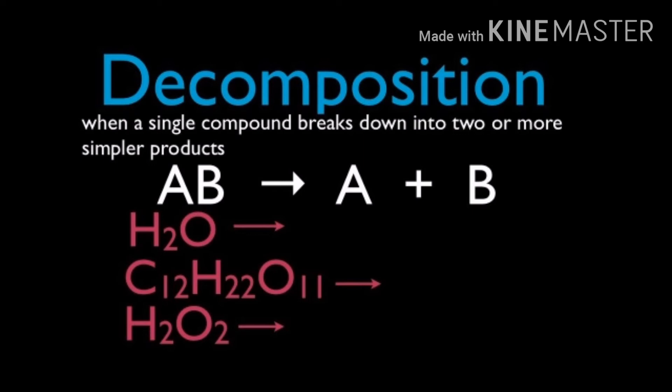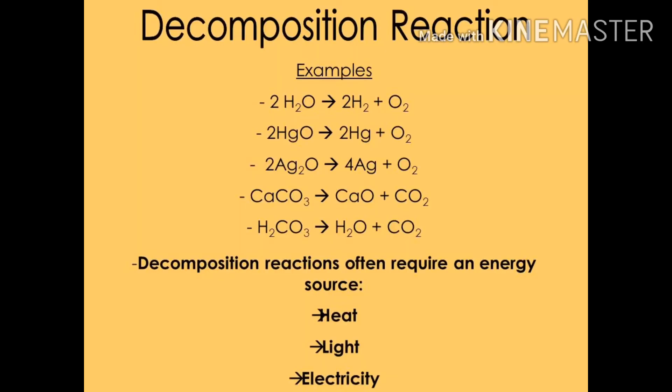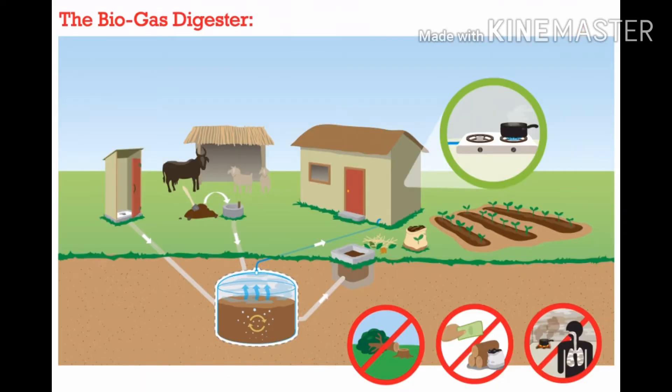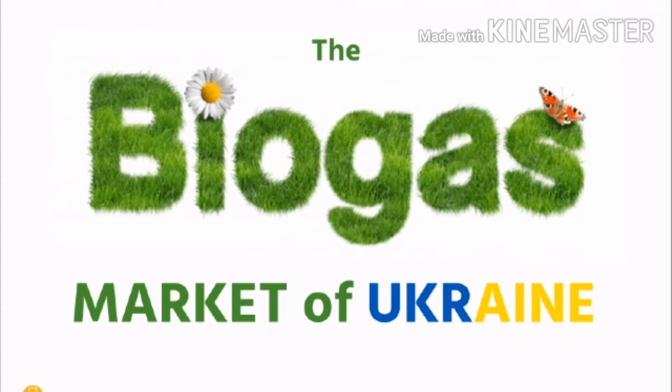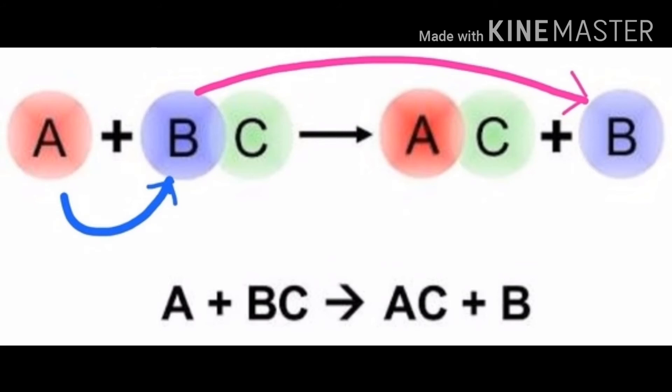The second type of chemical reaction is decomposition reaction: when two or more products are formed from a single reactant, then it is called decomposition reaction. Many degradation reactions that take place in nature are examples of decomposition reaction, which are brought about by various microorganisms. For example, formation of biogas.